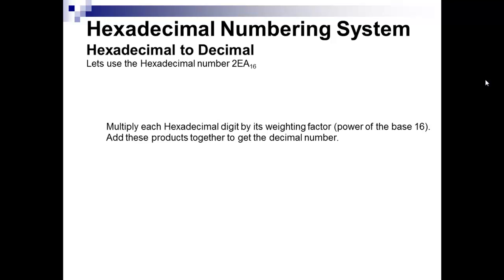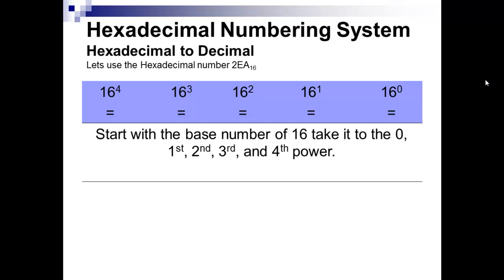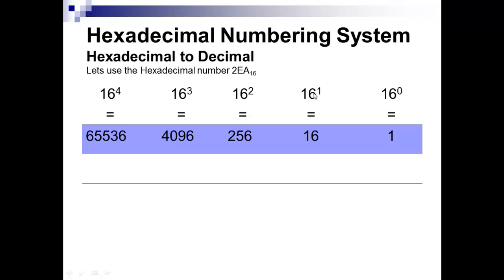So let's convert this number over, the 2EA. We need to create a chart again. Anytime you go from a numbering system to decimal, you always want to create a chart. Our chart is based on the base that we're going from to the power of 0, 16 to the power of 1, 2, 3 to the 4th. And remember, this is always 1. And then 16 to the first is 16, 16 to the second is 256, 4096, and 65,536. So you can see we can represent pretty big numbers with a very small amount of numbers. And also, the multiplying it times the base still holds true.